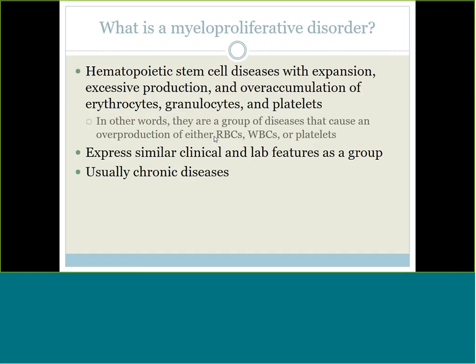Basically, a myeloproliferative disorder is when something is being overly produced. As the definition states, it's a stem cell disease with expansion, excessive production, and/or overaccumulation of one or more of the cell lines. It could be all three cell lines being overly produced, or just one. That is a myeloproliferative — an increase in proliferation. It's 'myelo,' meaning we're staying on the myeloid side of the stem cell chart. The myeloid stem cell breaks down eventually into red cells, platelets, or the granulocytes and monocytes. We're not focused on the lymphocytes here.